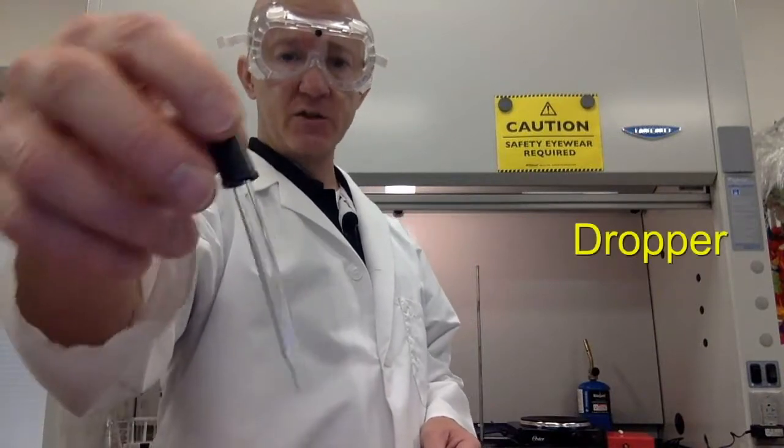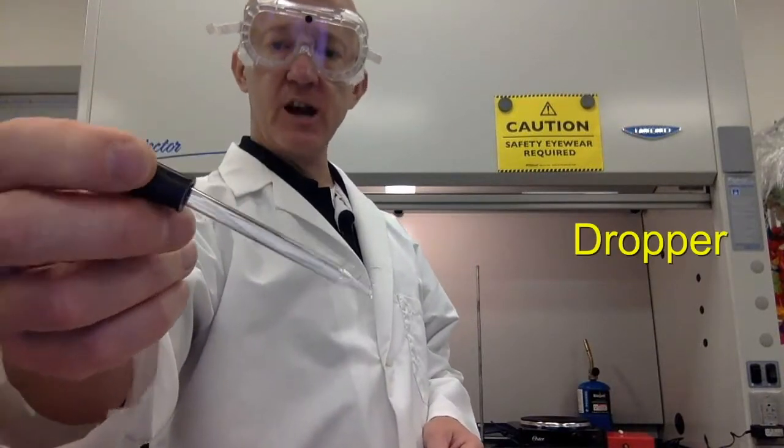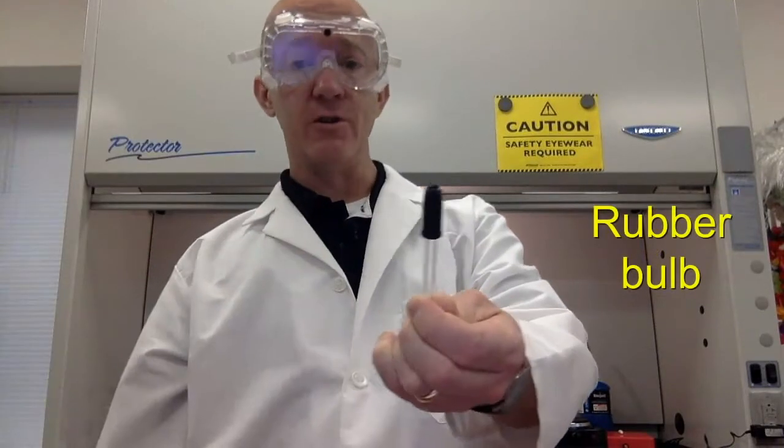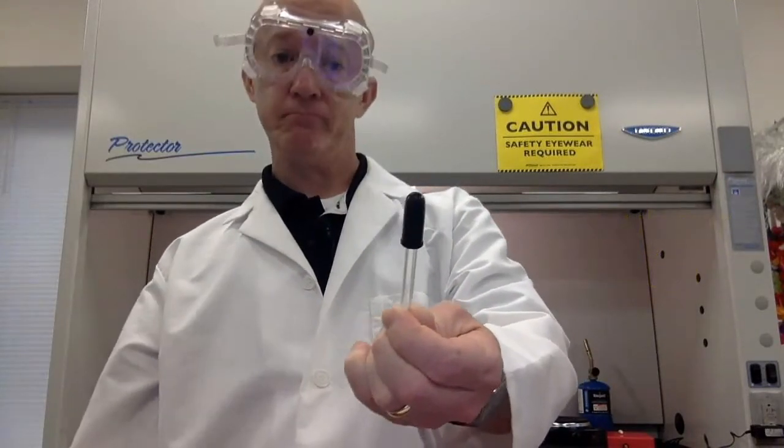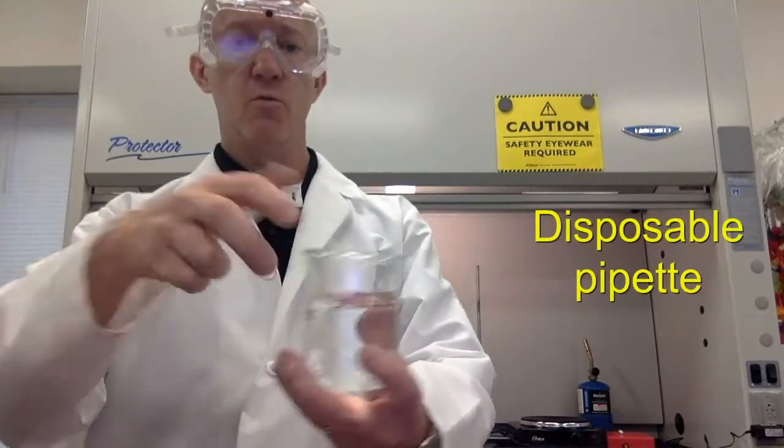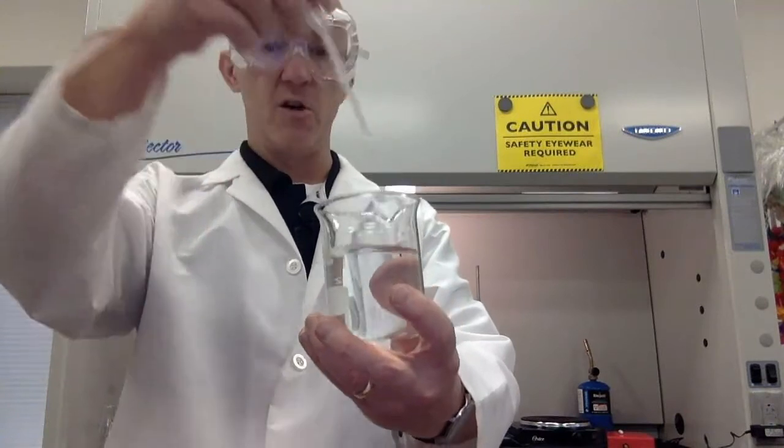This is a dropper. Pretty self-explanatory when we have little tiny amounts of volume that we need to transfer. This is called a rubber bulb. This is a disposable pipette. Again, when you need to transfer small volumes of liquid.